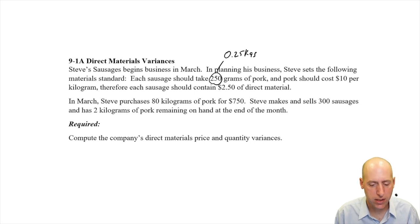In March, Steve purchases 80 kilograms of pork for $750. Steve makes and sells 300 sausages and has 2 kilograms of pork remaining on hand at the end of the month. Compute the company's materials price and quantity variances.